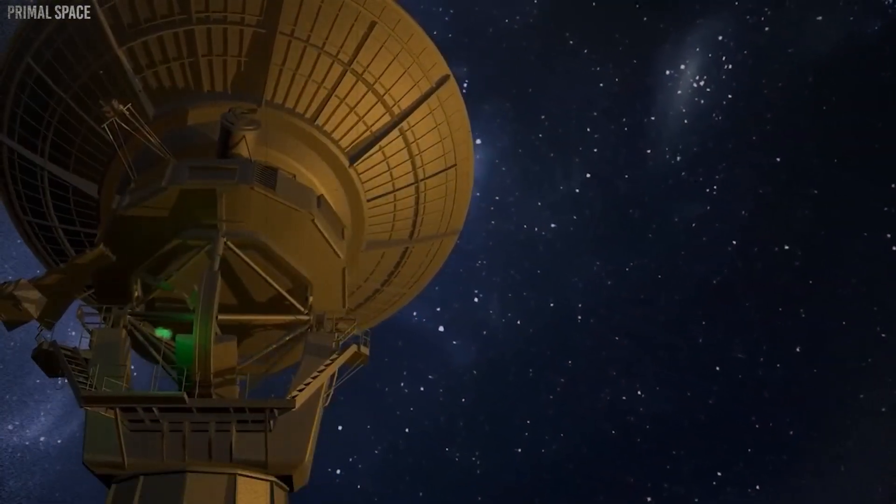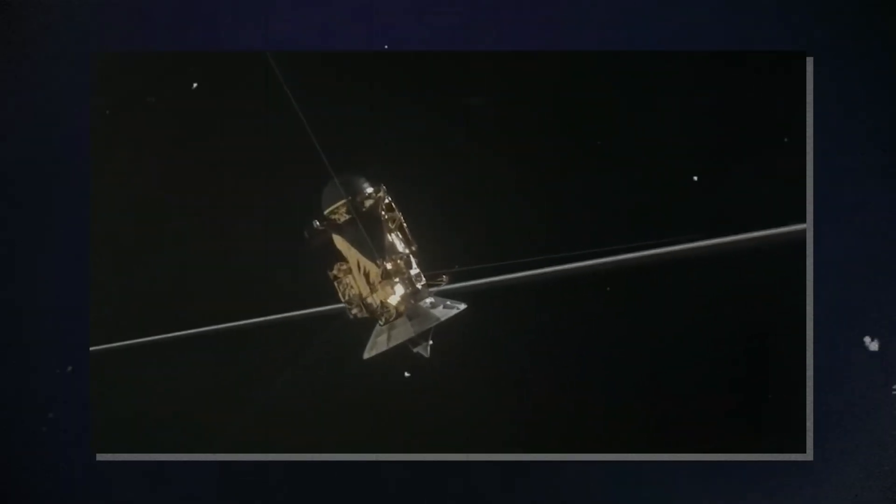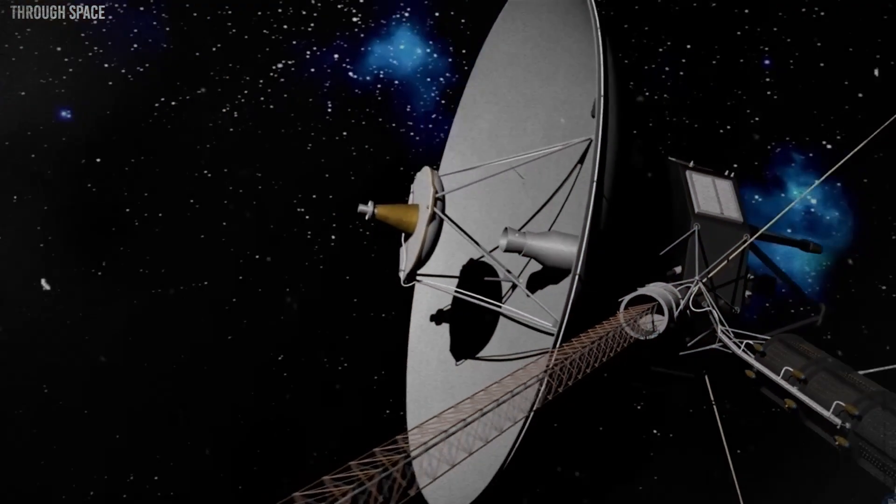NASA is carefully planning when to shut down each remaining instrument. Even after all instruments are turned off, Voyager will still be able to transmit basic information like its location.